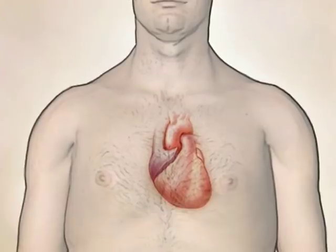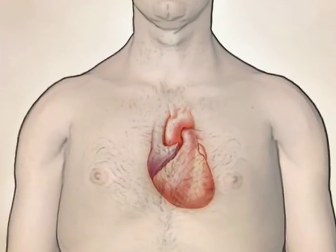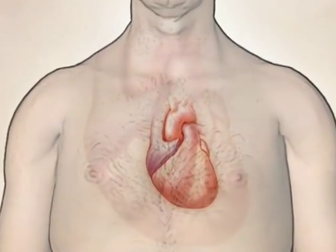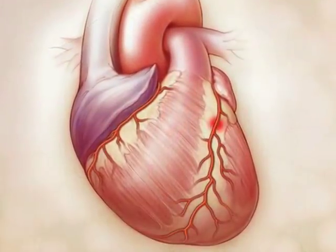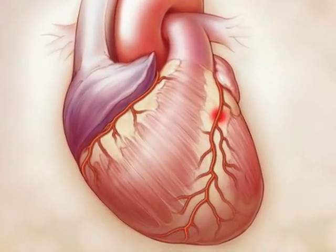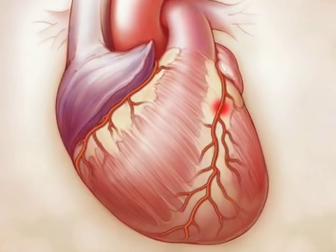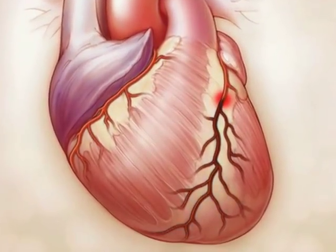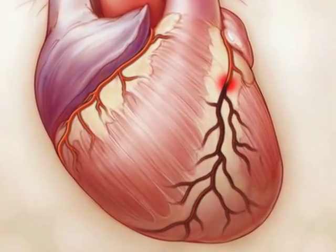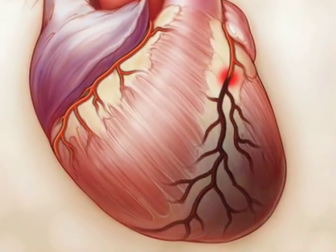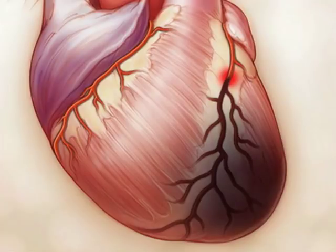Coronary artery occlusion results in reduced perfusion to the myocardium. Thrombosis within the coronary artery occludes blood flow downstream and could lead to an acute myocardial infarction.